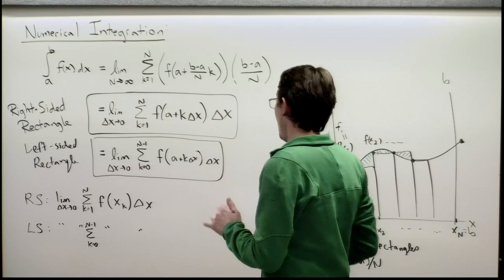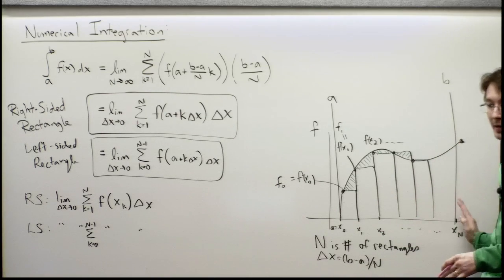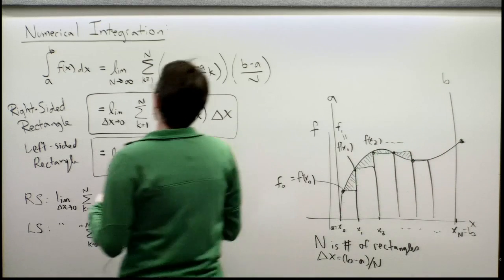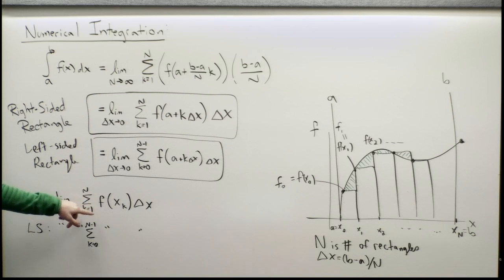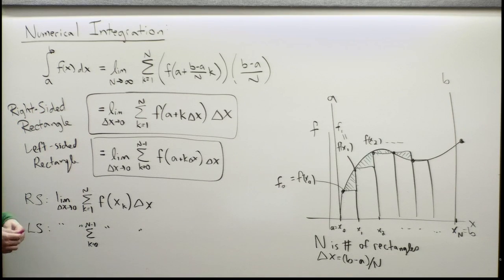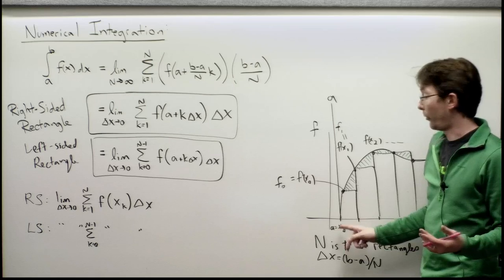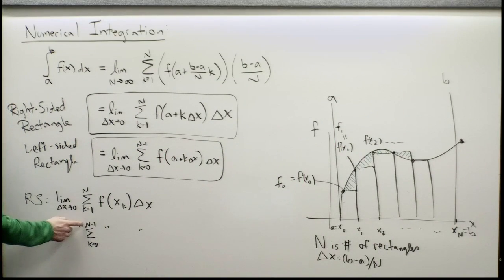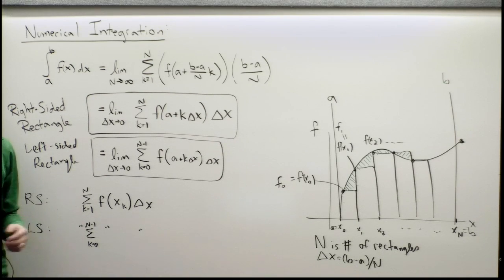This is the board we left on at the last lecture. We defined some function at discrete points in space — discrete x points. The right-sided rectangle rule says the integral from a to b of f of x exactly equals the limit as delta x goes to zero of the sum from k equals 1 to n of f(x_k) times delta x. Similarly, the left-sided rule defines the rectangle height using the left-most point, and the sum goes from k equals 0 to n minus 1. For numerical integration we're not going to take the limit — we just pick a small delta x and use these formulas.